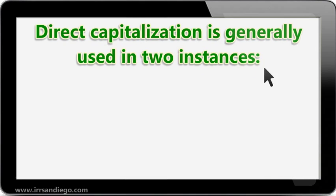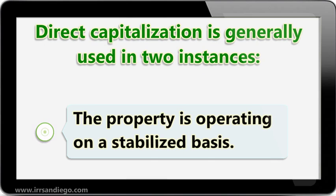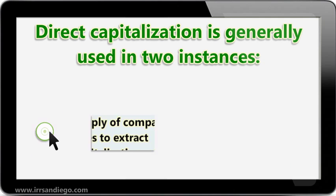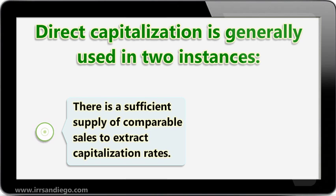Direct Capitalization is generally used in two instances. The first is if the property is operating on a stabilized basis — for example, if the property is leased at market rents and at a market occupancy rate. The second is when there is a sufficient supply of comparable sales to extract capitalization rates; in other words, there are enough similar properties that have sold and the comparable rates can be used to apply to the subject.